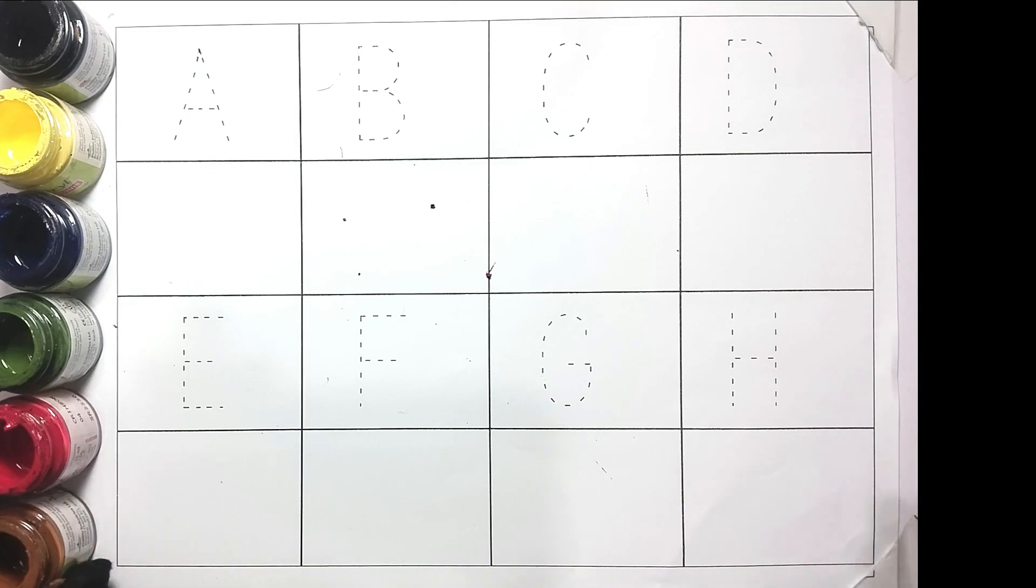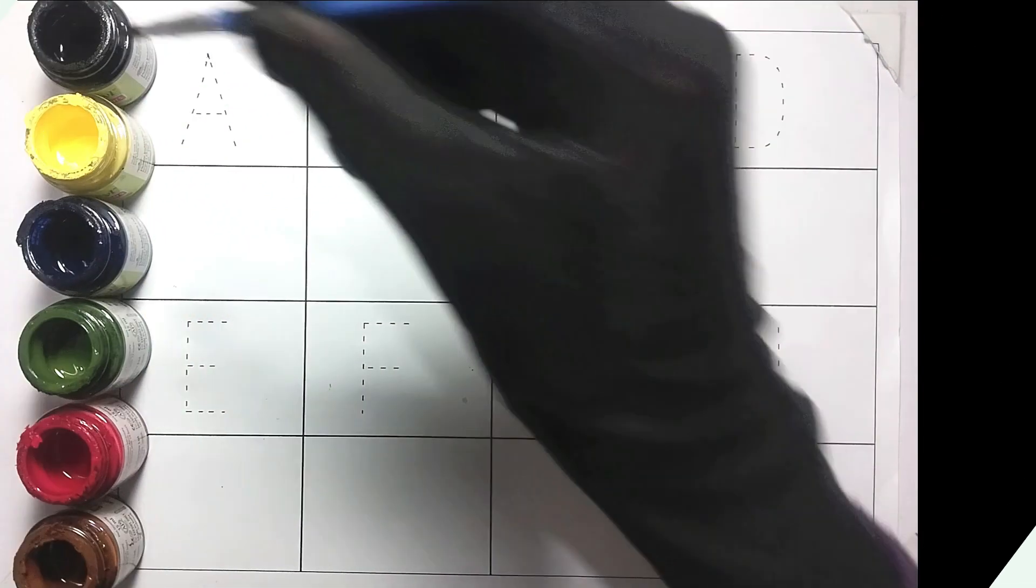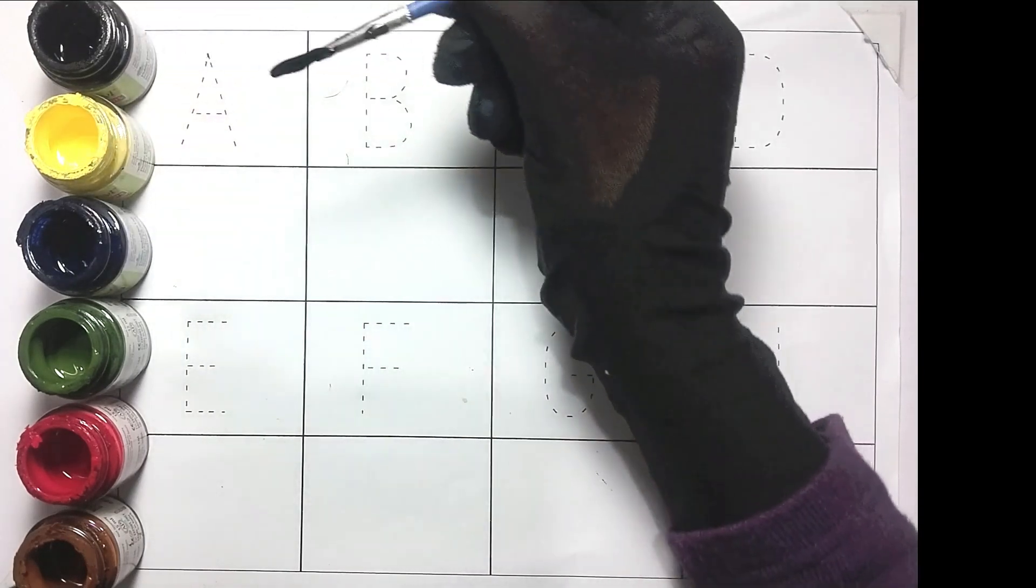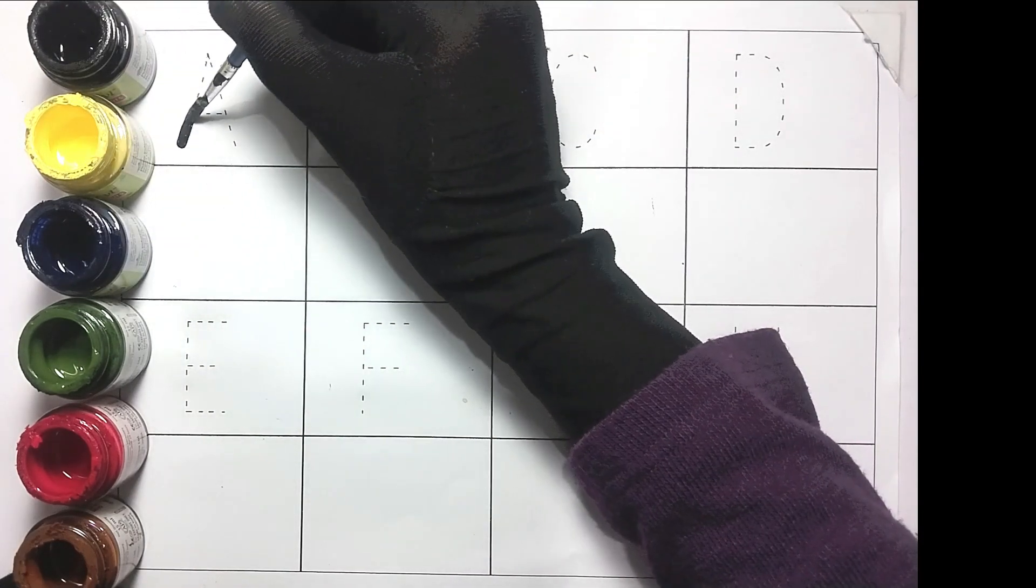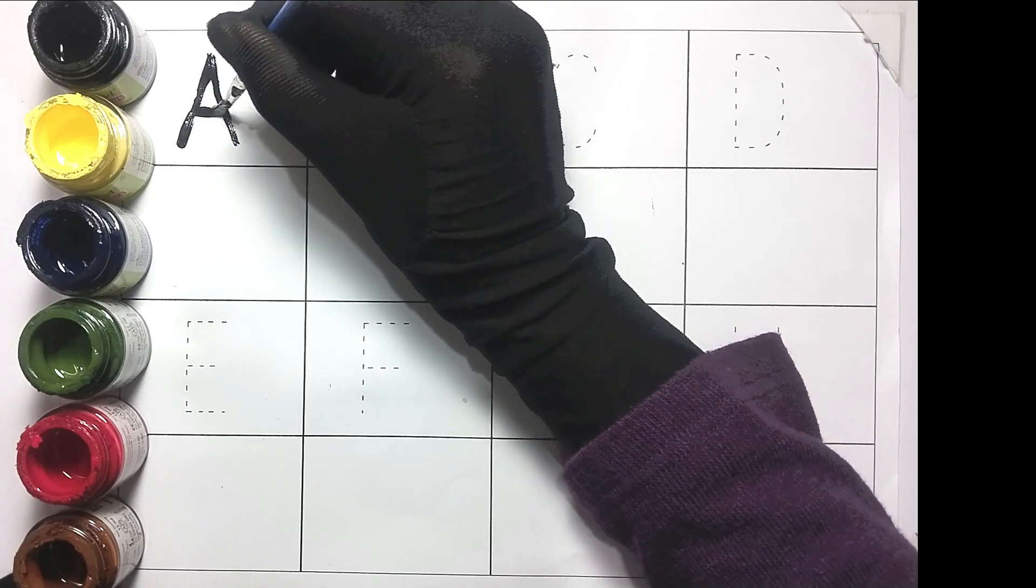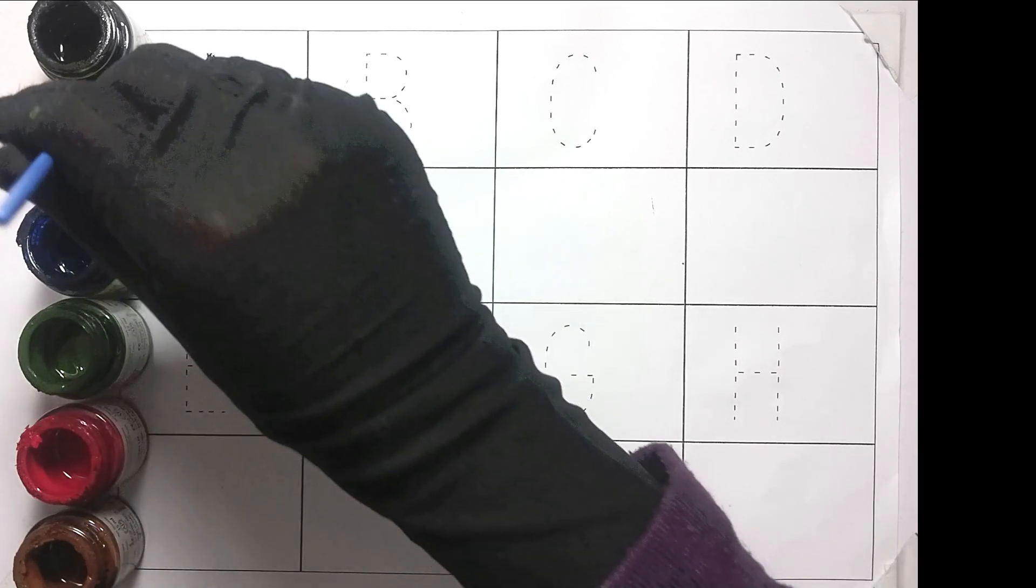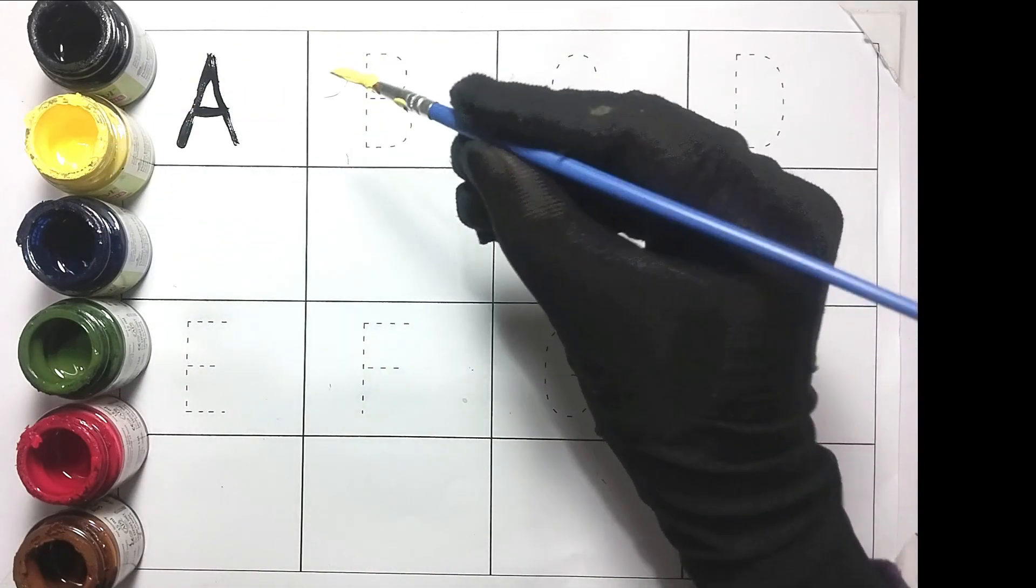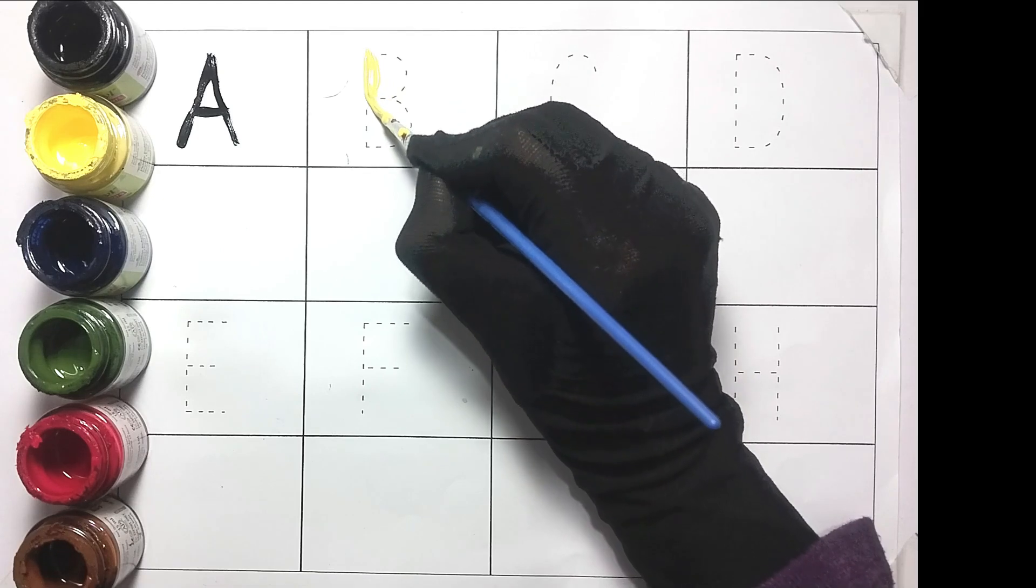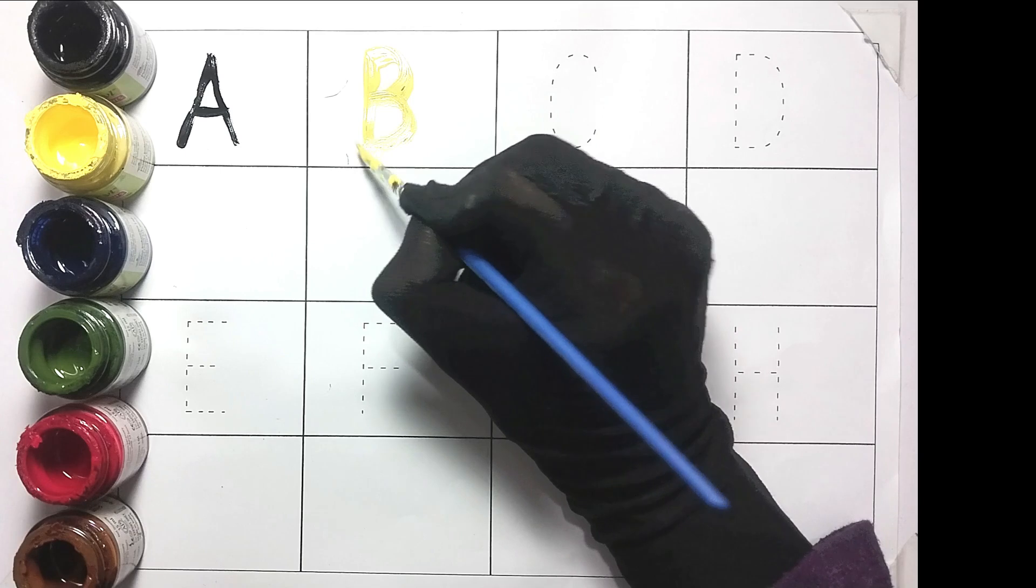So kids, let's start the video. Black color. A, A for ant. Yellow color. B, B for bird.